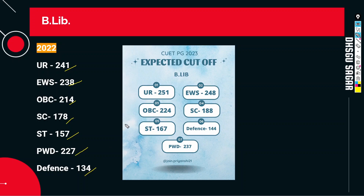Now we will talk about B.Lib. We will compare B.Lib also from 2022, because before this CUET was not held. So in 2022, UR cutoff was 241, EWS 238, OBC 214, SC 178, ST 157, PWD 227, Defense 134.